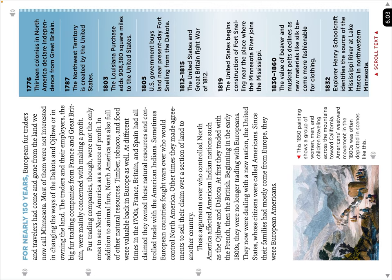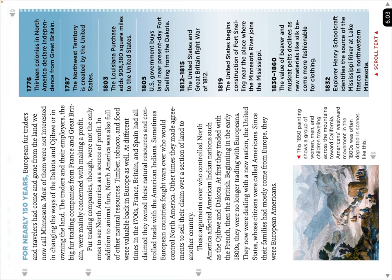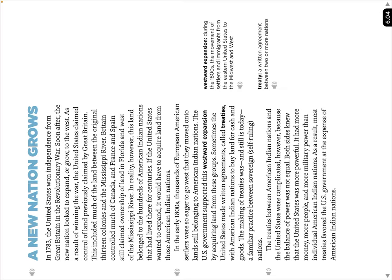At first the Dakota and Ojibwe traded with the French, then with the British. Beginning in the early 1800s they were no longer trading with Europeans — they were now dealing with a new nation called the United States, whose citizens were called Americans, and since their families had mostly come from Europe, they were European Americans. In 1783, the United States won independence from Great Britain in the Revolutionary War.